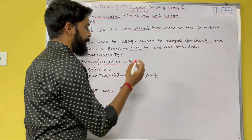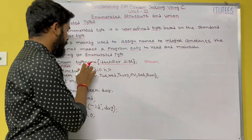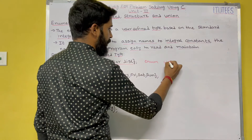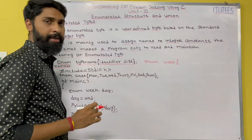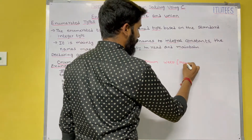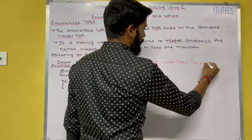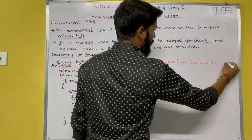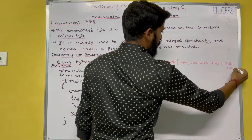For example, I am defining enum and the type name is 'week'. In this, I store all the day names: Monday, Tuesday, Wednesday, Thursday, Friday, Saturday, Sunday.